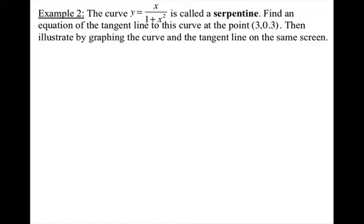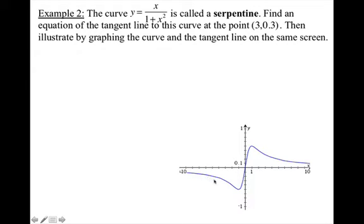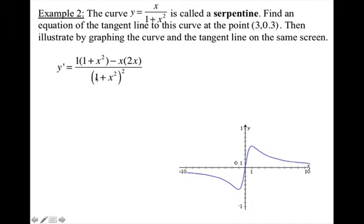Second example: the curve y equals x over (1 plus x²) is called a serpentine. Find an equation of the tangent line to this curve at the point (3, 0.3), then illustrate by graphing the curve and the tangent line on the same screen. The graph of the serpentine function looks like a weird, snakey shape — that's where they decided to name it serpentine. To find the derivative, you have to use the quotient rule: the derivative of the top times the bottom, minus the top times the derivative of the bottom (which is 2x), all over the bottom squared.